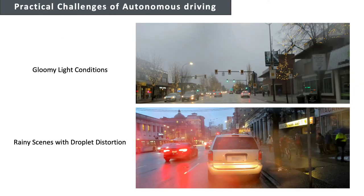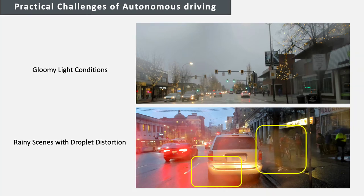Autonomous driving under different weather conditions is challenging. Images captured during rainy weather can be blurry, especially when suffering from gloomy light conditions and droplet distortions. So, it is urgent to have a dataset that can satisfy the practical demands of autonomous driving.